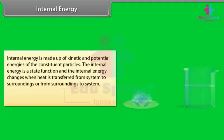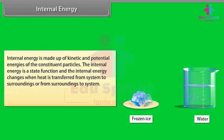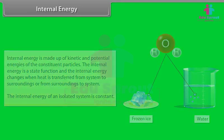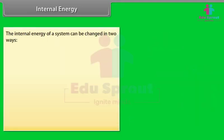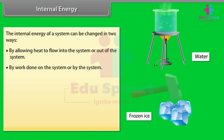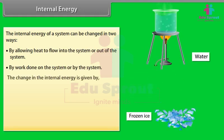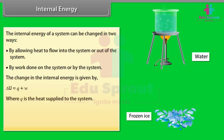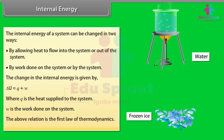Internal energy is made up of kinetic and potential energies of the constituent particles. The internal energy is a state function, and it changes when heat is transferred from system to surroundings or from surroundings to system. The internal energy of an isolated system is constant. The internal energy of a system can be changed in two ways: by allowing heat to flow into or out of the system, or by work done on or by the system. The change in internal energy is given by ΔU = Q + W, where Q is the heat supplied to the system and W is the work done on the system. This relation is the first law of thermodynamics.